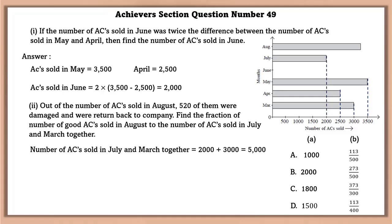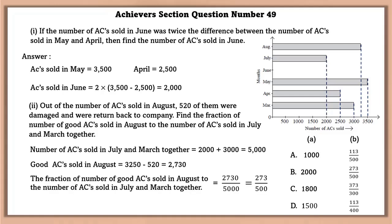Second question. Out of the number of ACs sold in August, 520 of them were damaged and were written back to the company. Find the fraction of number of good ACs sold in August to the number of ACs sold in July and March together. Now, first, the number of ACs sold in July and March together is 5,000. Good ACs sold in August is equal to number of ACs minus the bad ACs, that is 2,730. Now, the fraction of number of good ACs sold in August to the number of ACs sold in July and March together is equal to 273 by 500.